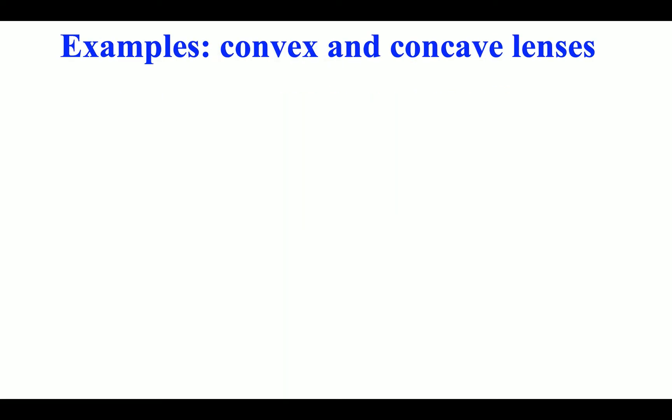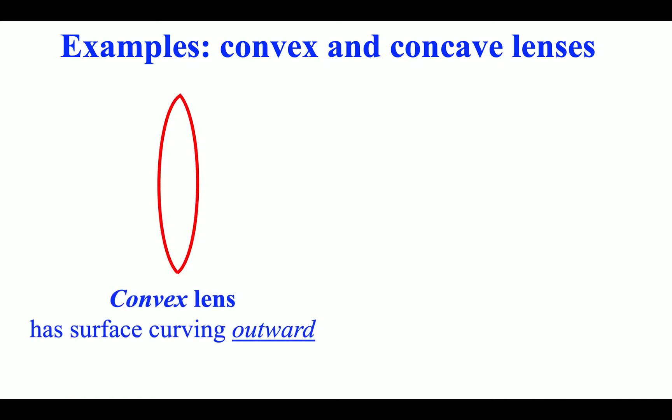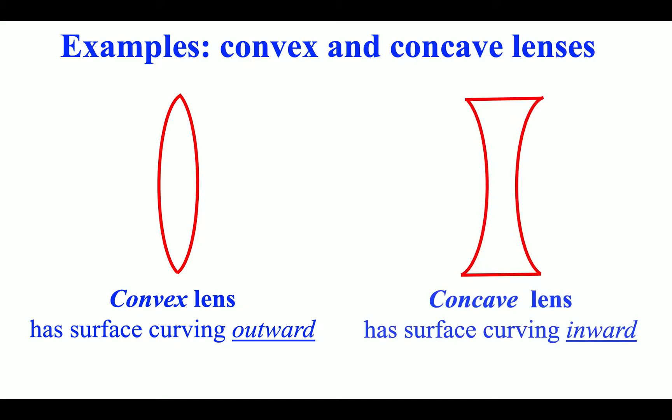Examples: convex and concave lenses. A convex lens has a surface curving outward, while a concave lens has a surface curving inward.